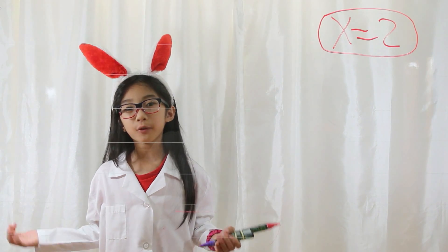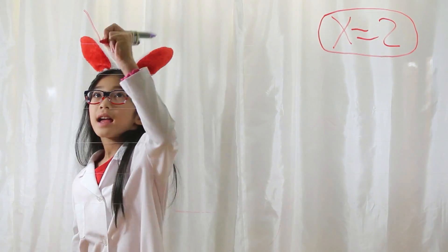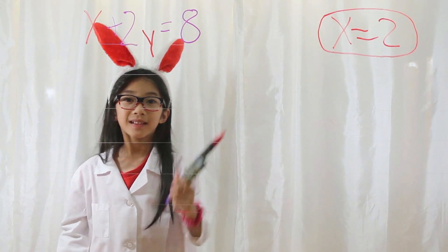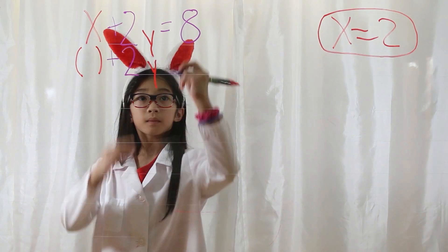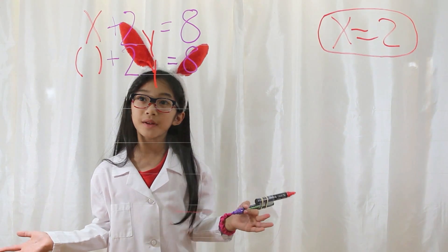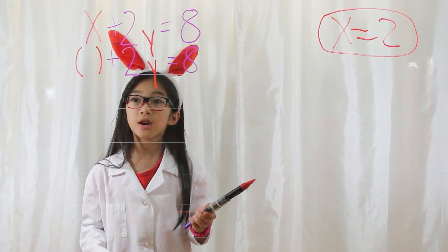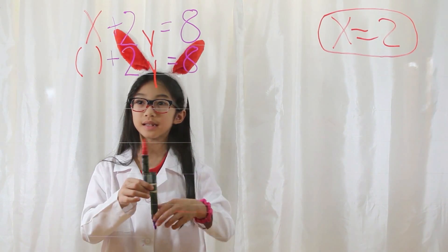Now we have to solve for y by plugging x into one of the equations. What goes in the parentheses? Well, whatever equals to x. So since x is equal to 2, I'm going to write 2 in the parentheses.